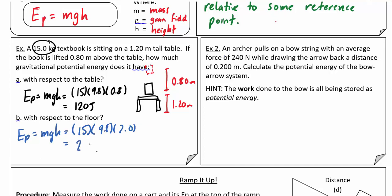We're going to look at just one last example. I know I said we're going to spend most of our time talking about gravitational potential energy, but since we learned a little bit about elastic forces, it's worth taking a look at what happens when we have elastic potential energy. If an archer pulls a bow string with an average force of 240 newtons while drawing the arrow back a distance of 0.2 meters, calculate the potential energy of the bow-arrow system.